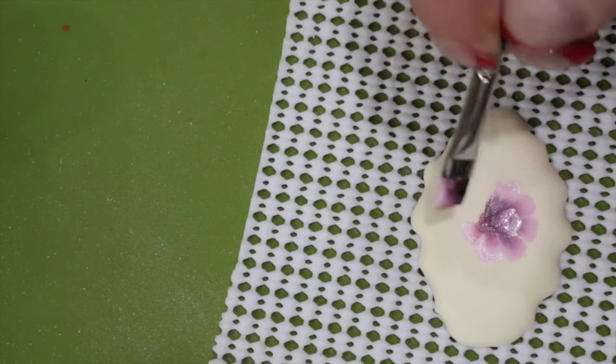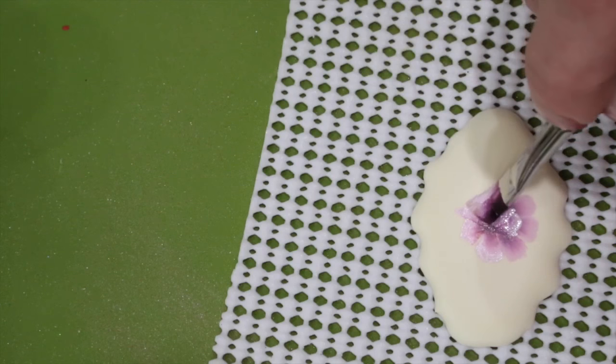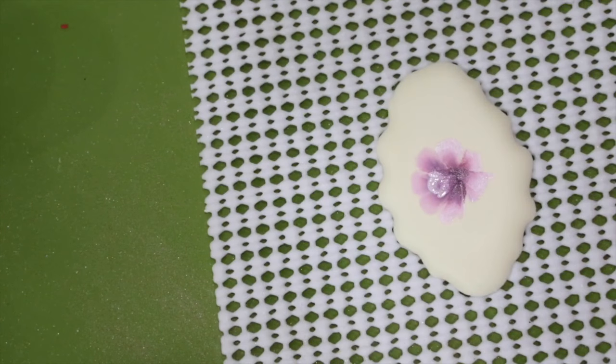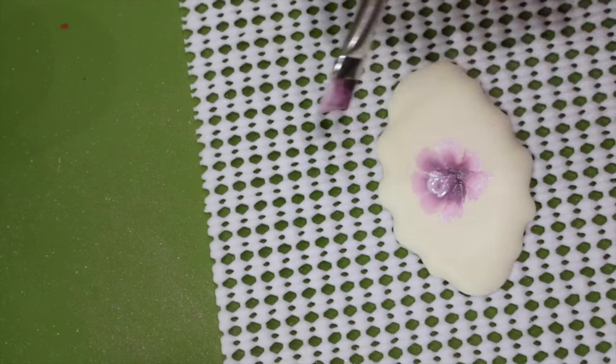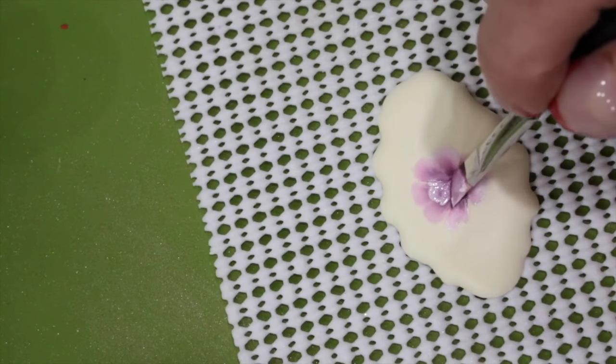Be mindful that the toe of your brush should have the white food color on it and the heel should have the dusty pink. Go ahead and add the side petals closest to your bud.